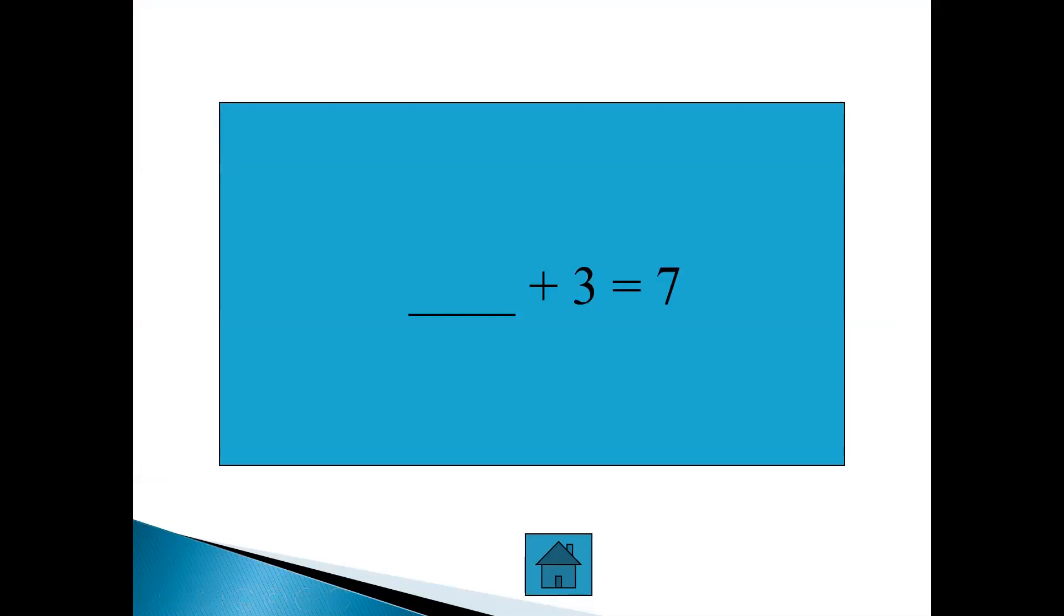What plus three makes seven all together? Okay. Let's start with seven fingers again. Ready? One, two, three, four, five, six, seven. Okay. Now we already have three. So let's take away three fingers. One, two, three. How many fingers do you have left?